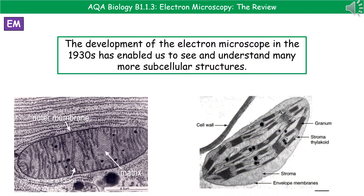The better microscope is the electron microscope. Back in the 1930s, we actually developed this new type of microscope that, rather than using light, uses a beam of electrons. Through the use of this electron microscope, it's actually enabled us not only to see a lot more of the subcellular structures, but also to understand how they work. I've given you a couple of images at the bottom — on the left we've got a mitochondria, so you can see a lot more detail there, and on the right is a chloroplast.